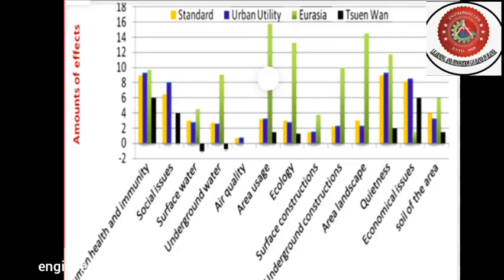A graph shows environmental components and their anonymous effects in different proportions. Some of the major environmental impacts are on human health and immunity, social issues, surface water, underground water, air quality, air usage, ecology, surface constructions, underground constructions, landscape, quietness, environmental issues, and soil of the area.